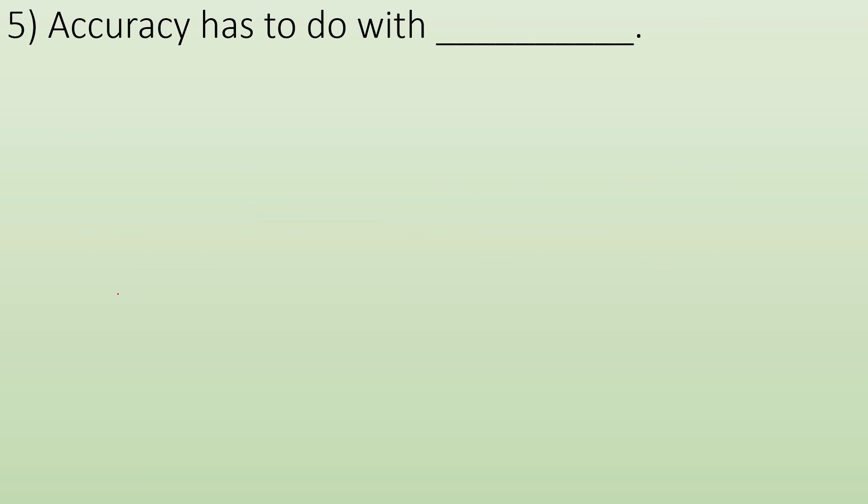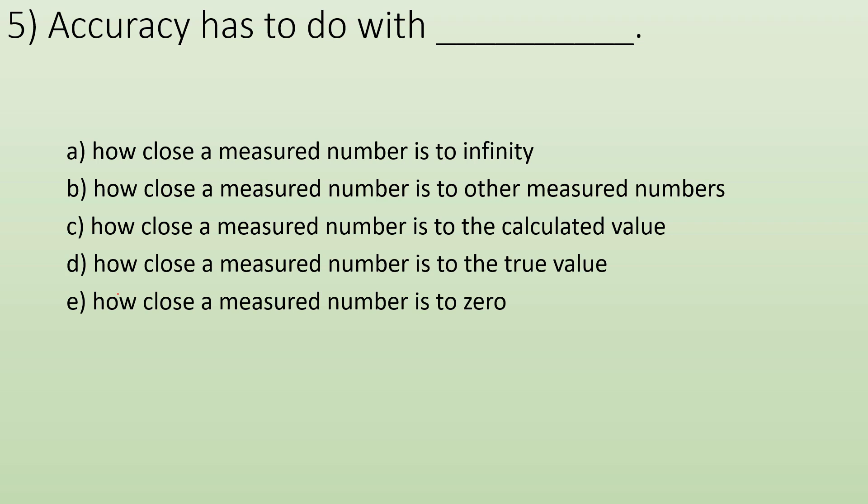Accuracy has to do with what? Again, accuracy has to do with how close a measured number is to the true value. So accuracy has to do with the true value. The rest of these are the same kind of options as the previous problem before precision, this time choice D.